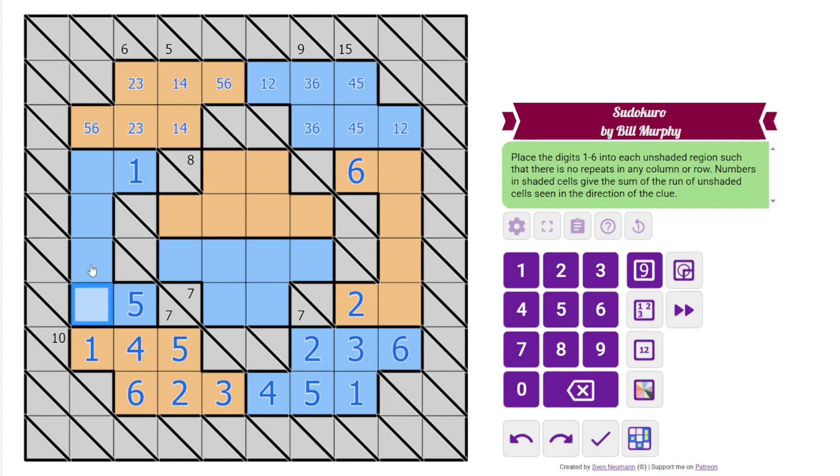Alright, we have a 5 here now. These aren't 5, this must be the 5 in the column. That makes that a 6. And that's going to resolve some stuff up here. The 3 looks over here. It's going to finish off the top of the grid.